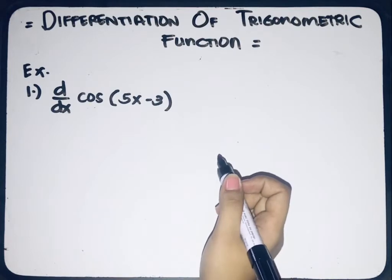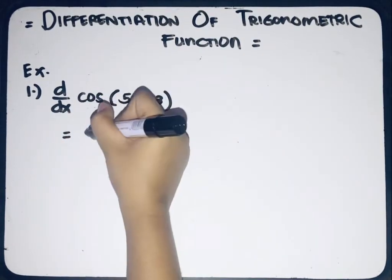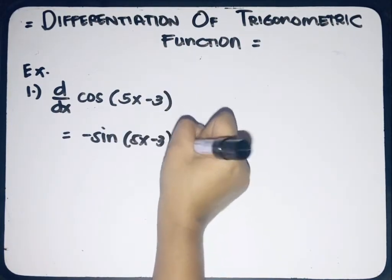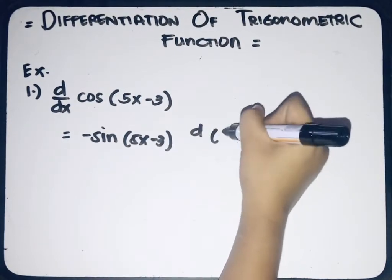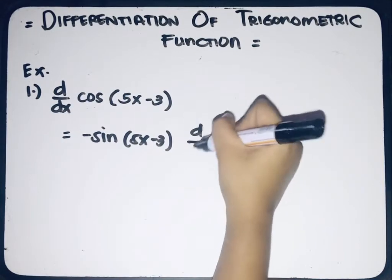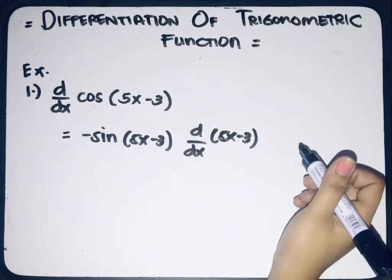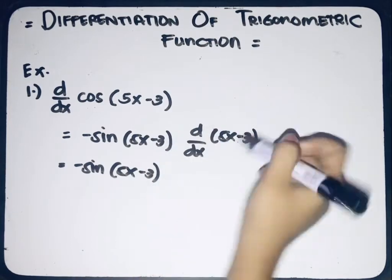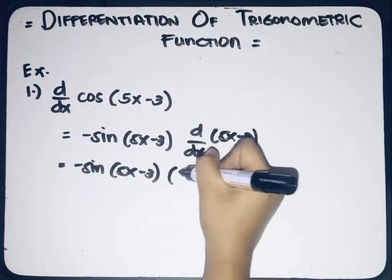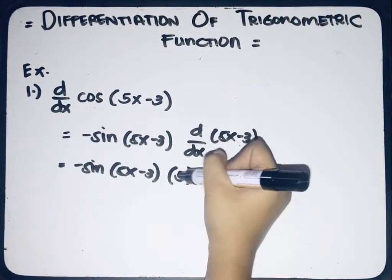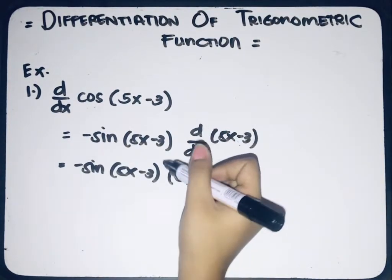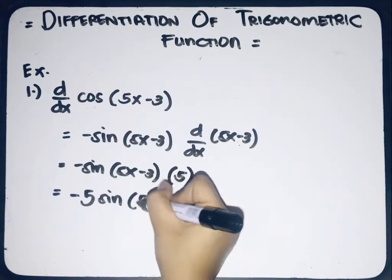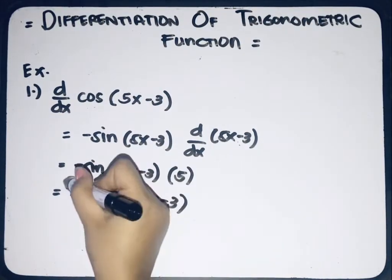By using the formula, the derivative of cosine gives us negative sine of 5x minus 3, multiplied to the derivative of 5x minus 3 with respect to x. We'll have negative sine of 5x minus 3, and the derivative of 5x minus 3 is equal to 5. Since 5 is a constant, we can write it in front. So we'll have negative 5 sine of 5x minus 3 as the final answer.